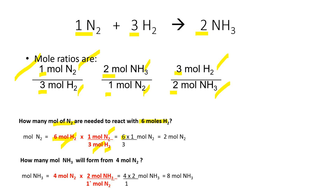How many moles of nitrogen are needed to react with 6 moles of hydrogen? Given times conversion factor, unknown over given: 6 times 1 divided by 3 gives 2 moles of N₂. How many moles of NH₃ will form from 2 moles of N₂? Given times conversion factor — 2 (coefficient of NH₃) over 1 (coefficient of N₂) — cancel moles of nitrogen: 2 times 2 divided by 1 equals 4 moles of NH₃.